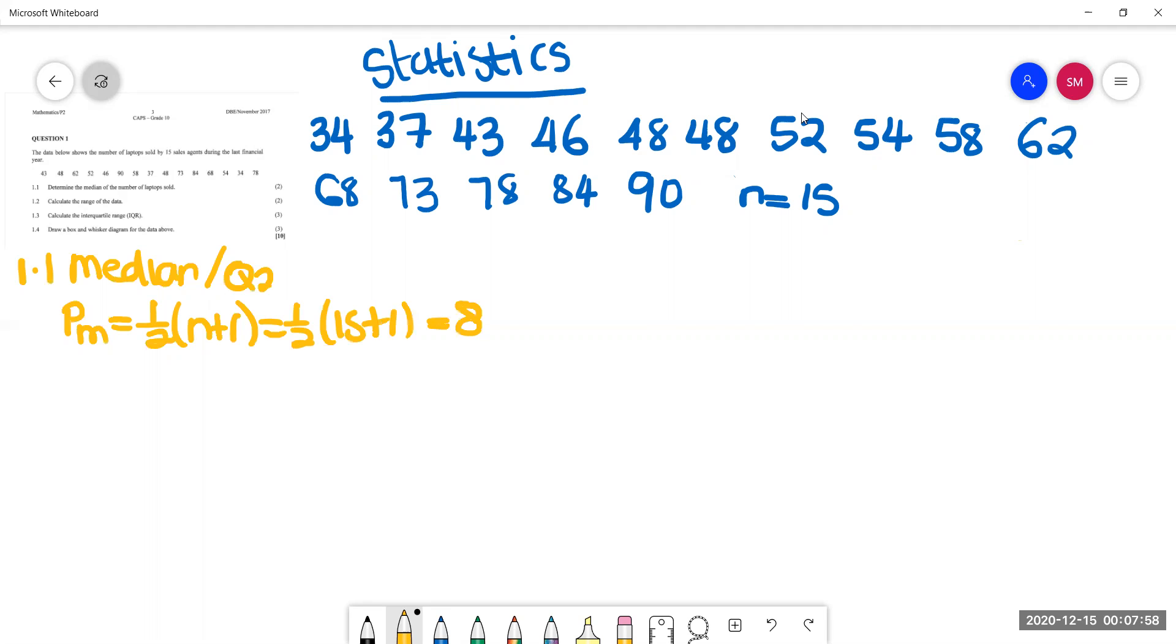Then we're going to our data set to look for the value that sits at position 8. So we have 1, 2, 3, 4, 5, 6, 7, 8. That is Q2. So that is our value for the median.